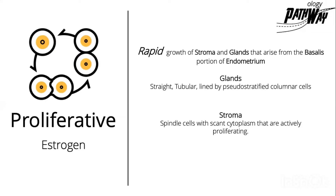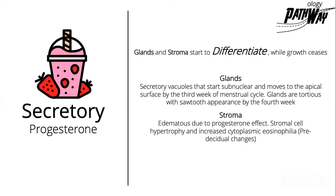If not in the proliferative phase, the endometrium will be inactive. In the secretory phase, the endometrium is under the effect of progesterone, so the glands and stroma start to differentiate while growth ceases. You will find secretory vacuoles in the glands that start subnuclear and move to the apical surface by the third week of the menstrual cycle. By the fourth week, the glands are tortuous and have a sawtooth appearance. The stroma becomes edematous due to the progesterone effect, and stromal cells will hypertrophy and show cytoplasmic eosinophilia — these are called pre-decidual changes.